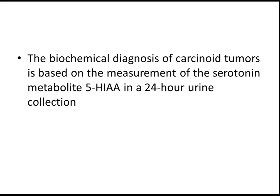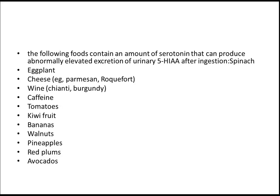For diagnostic tests, you should measure urinary 5-hydroxyindoleacetic acid — 5-HIAA — level, which is a serotonin metabolite. Certain foods contain amounts of serotonin that can produce abnormally elevated excretion of urinary 5-HIAA after ingestion, so ask about dietary history to avoid confusion. These foods include spinach, eggplant, cheese, wine, caffeine, tomatoes, kiwi fruit, bananas, walnuts, pineapples, red plums, and avocado.